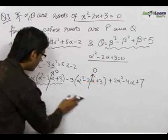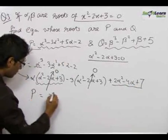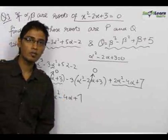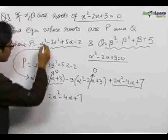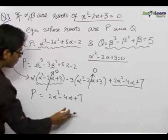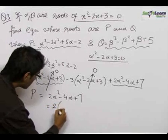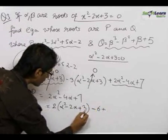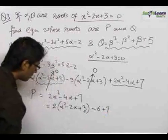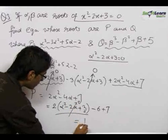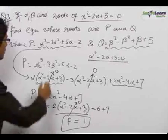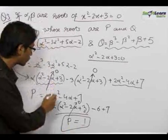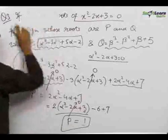We are left with 2α² - 4α + 7. The trick of creating the (α² - 2α + 3) factor has proved very useful — the cubic term has reduced to a square term. We write this as 2(α² - 2α + 3) - 6 + 7. Since (α² - 2α + 3) = 0, we get p = 1. So the long expression α³ - 3α² + 5α - 2 reduces simply to 1.